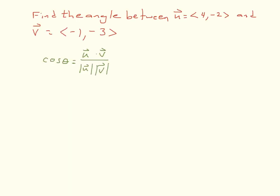Let's look at an example. We want to find the angle between vector u = (4, negative 2) and vector v = (negative 1, negative 3). The cosine of the angle is u dot v over the magnitude of u times the magnitude of v. I want you to pause the video and identify the dot product u dot v, the magnitude of u, and the magnitude of v. Once you're done, come back and we'll finish the problem.